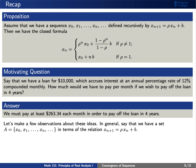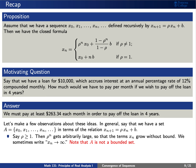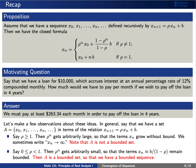Let's make a few observations about the sequence capital A coming from the terms at the top of the slide. If rho is greater than 1, then our sequence increases without bound — the set A is not a bounded set. On the other hand, if rho is between 0 and 1, then rho to the n gets arbitrarily small. In this case, our set A is bounded, so we have a bounded sequence.